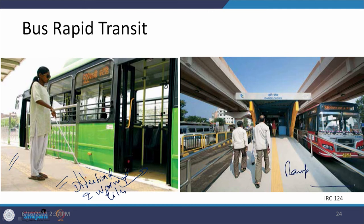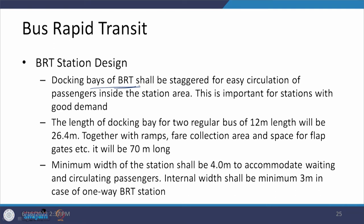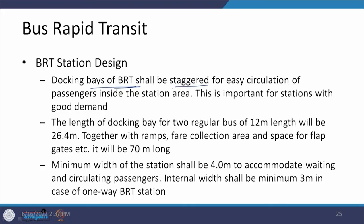A ramp system provides entry or exit on either side within a closed system with lane barricades. For docking bays, when multiple buses come from both or the same direction, bays should be staggered for easy passenger circulation to avoid crowding at one location. The length of the docking bay for two regular 12-meter buses shall be 26.4 meters, and together with ramps, fare collection area, and flap gates this comes out to 70 meters long.